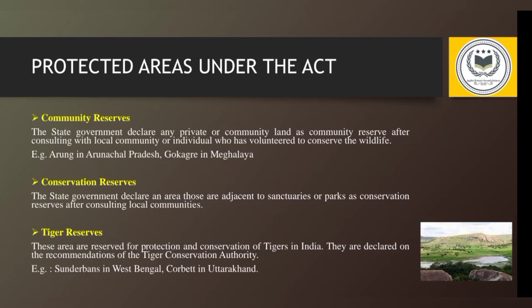There are 104 national parks in India. Community reserves are private or community lands declared by the state government for conserving wildlife. Examples include Arunachal Pradesh's area and Kokagiri in Meghalaya; there are 214 community reserves in India. Conservation reserves are areas adjacent to sanctuaries or national parks, declared by the state government after consulting local communities; examples include Mamadapur Conservation Reserve, and there are currently 97 conservation reserves in India.